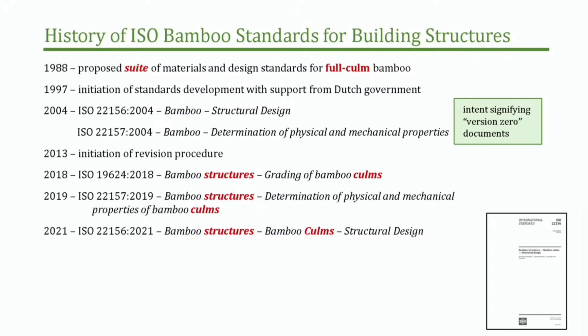Jumping ahead about ten years, we started looking at revising these. Standards don't just stop. ISO is a bureaucracy — it's a slow grind. But in recent years we've produced a suite of standards. We've updated the mechanical test standard, updated the design standard, and introduced a new standard on grading. We changed the title to 'bamboo structures' — we're talking about building structures now — and we've identified culms in the title, i.e., round bamboo. There are also three new standards coming that talk about engineered bamboo.